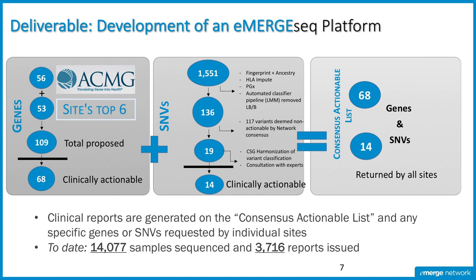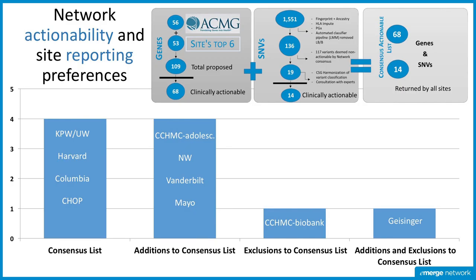We say return by all sites, but I'm going to show you that's not exactly true. What was really useful about this exercise was coming to agreement across all the sites, because that way we could have more common data return. And you'll notice that this is more than the 59 genes that ACMG endorses, which are fundamentally based on the ClinGen categories.